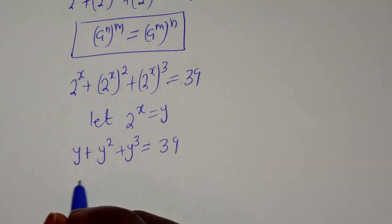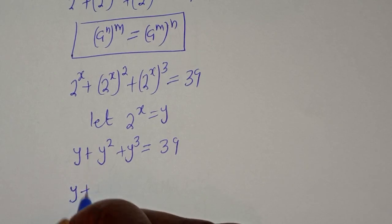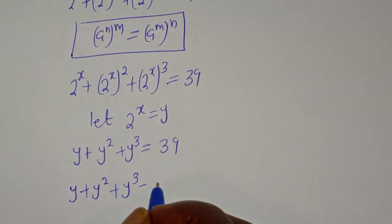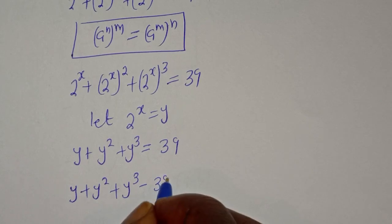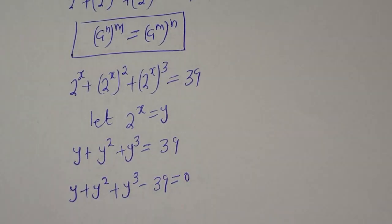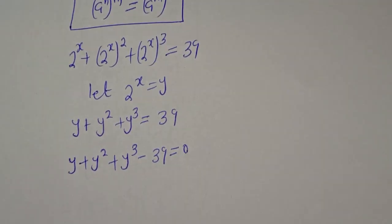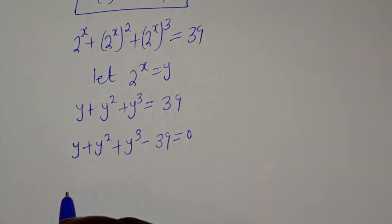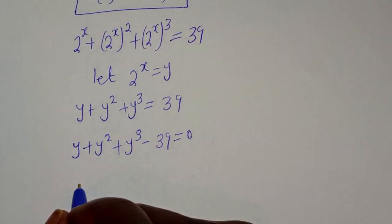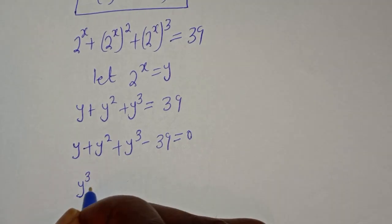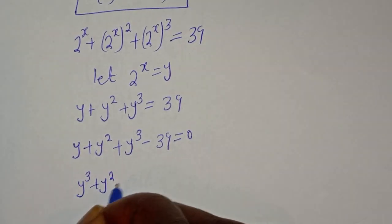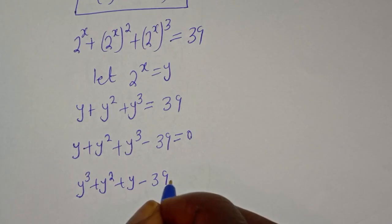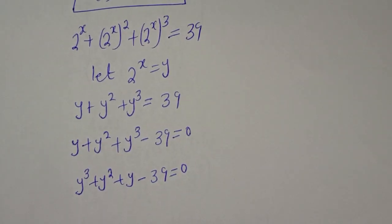Rearranging: y plus y squared plus y raised to power 3 minus 39 is equal to 0, which becomes y raised to power 3 plus y squared plus y minus 39 is equal to 0.